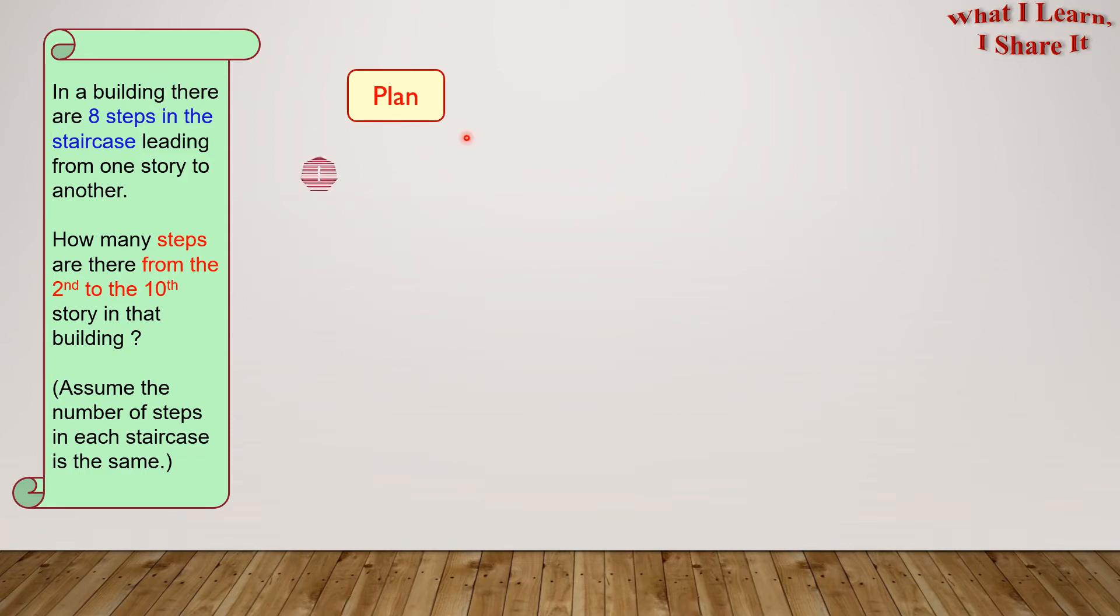Plan. So first, we will calculate how many staircases will be from the 2nd to 10th story. And then, we will find the total number of steps. Since the number of steps in each staircase is the same, we can easily find the total number of steps.